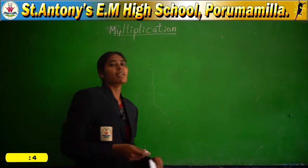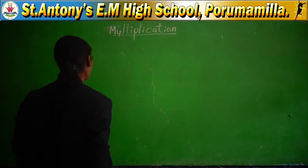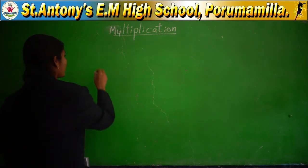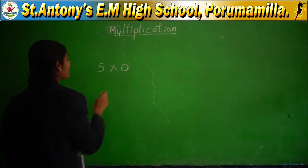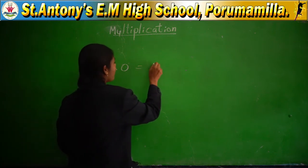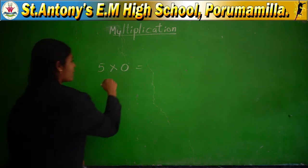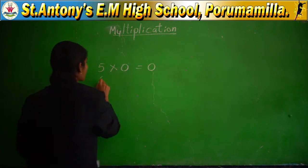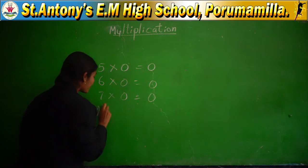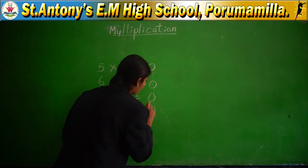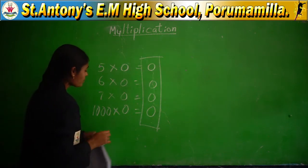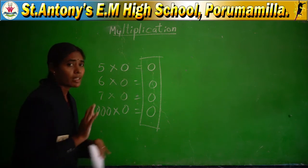In multiplication, if any number is multiplied by 0 — for example, 5 into 0 — you will get 0. Not the same number. 5 zeros are 0, 6 zeros are 0, 7 zeros are 0, 1000 zeros are 0 only. If you multiply with 0, you will get the product as 0.